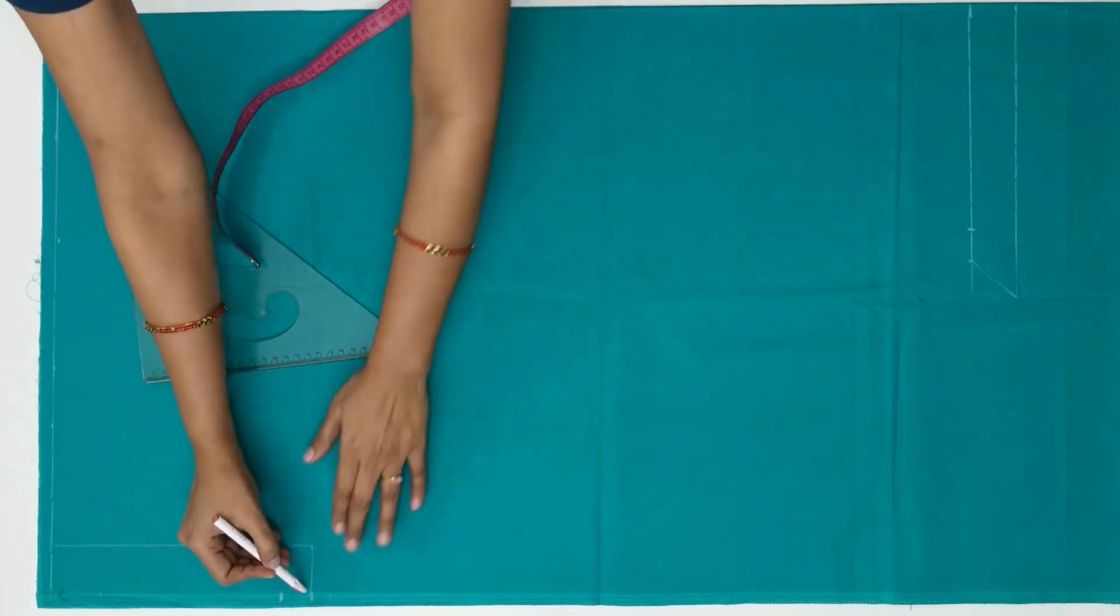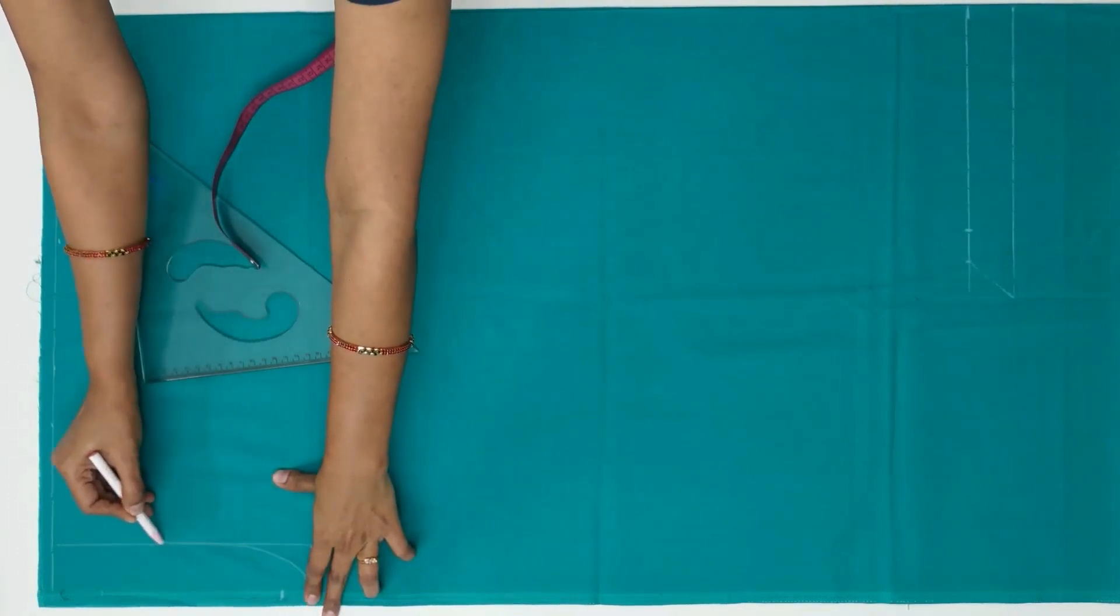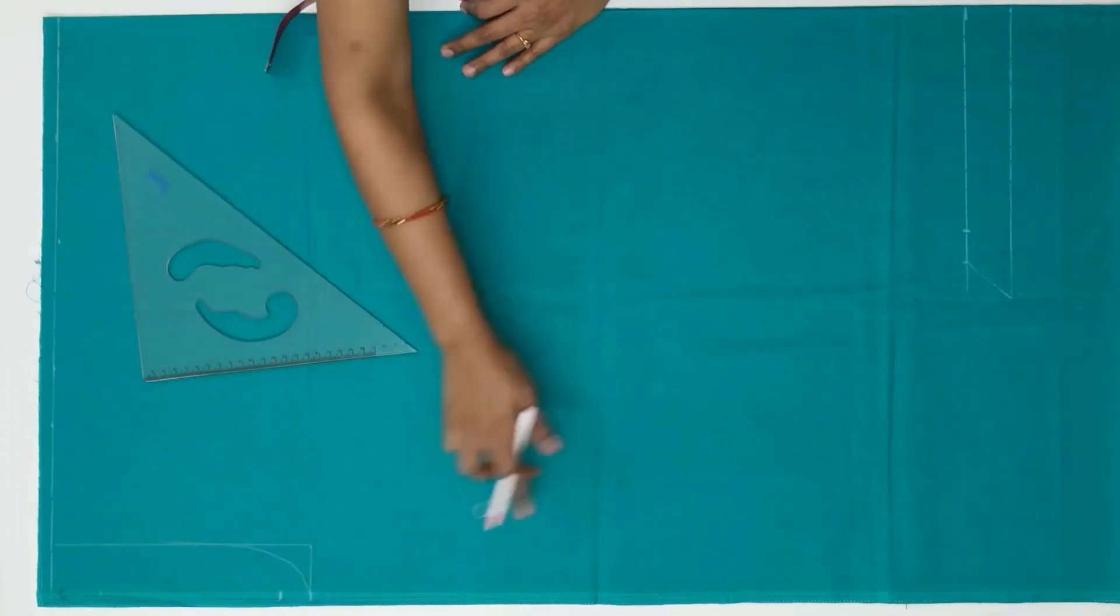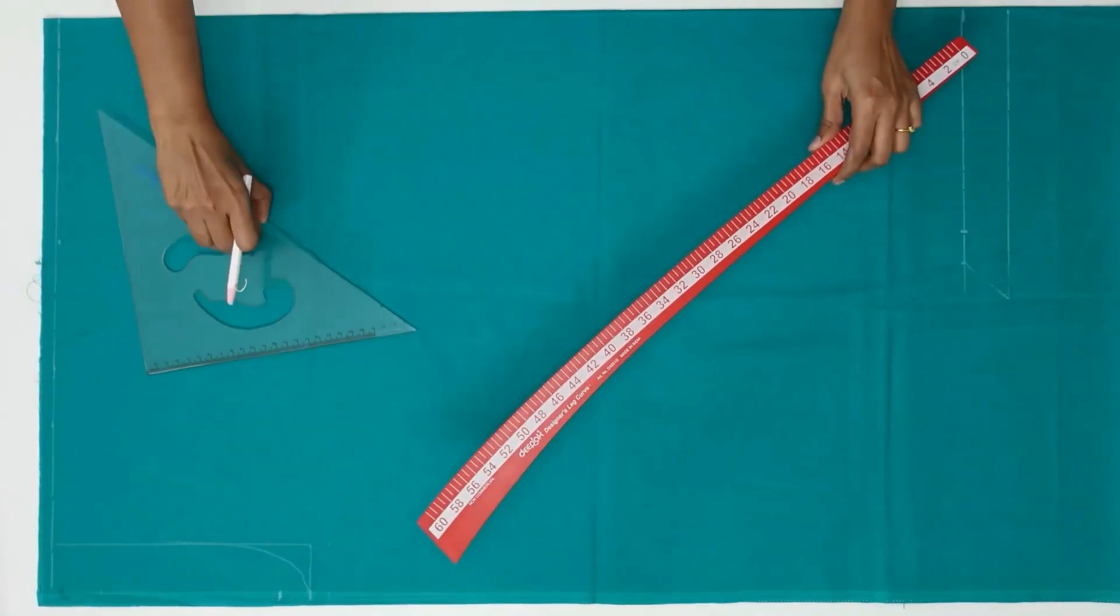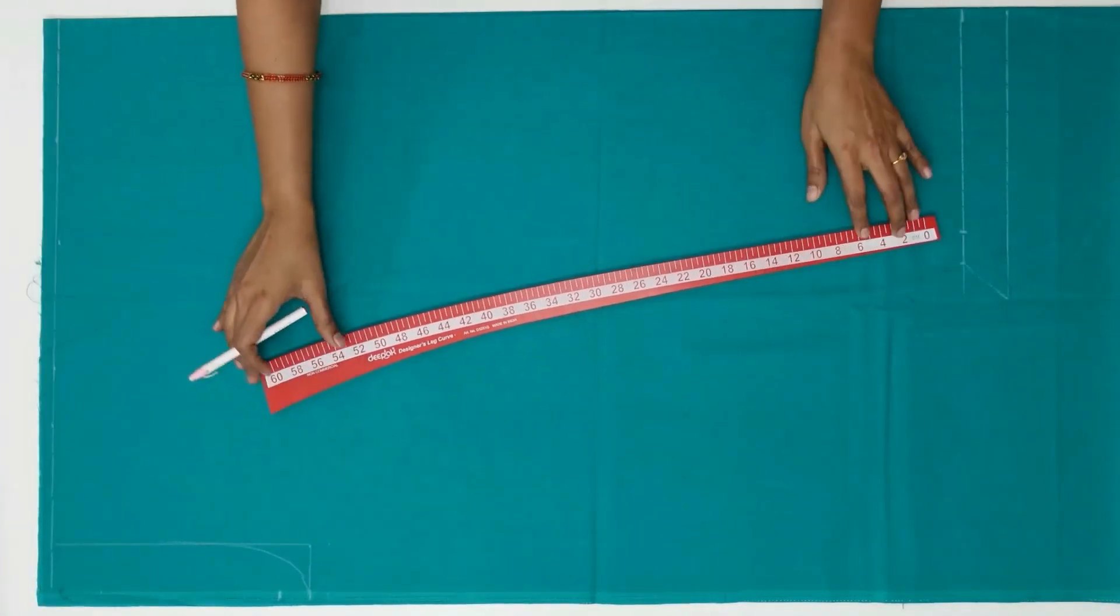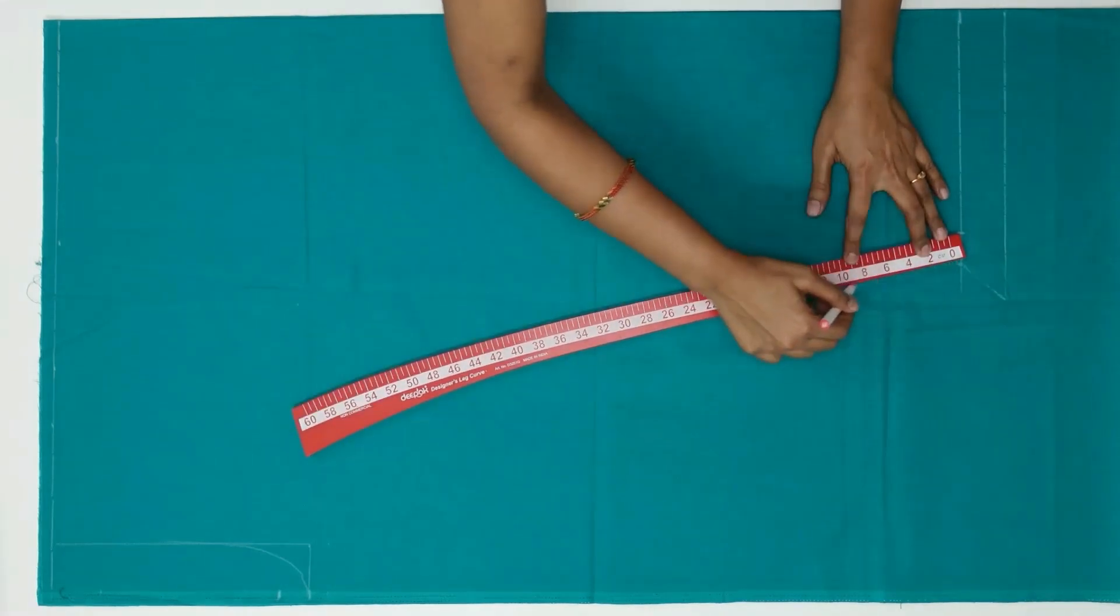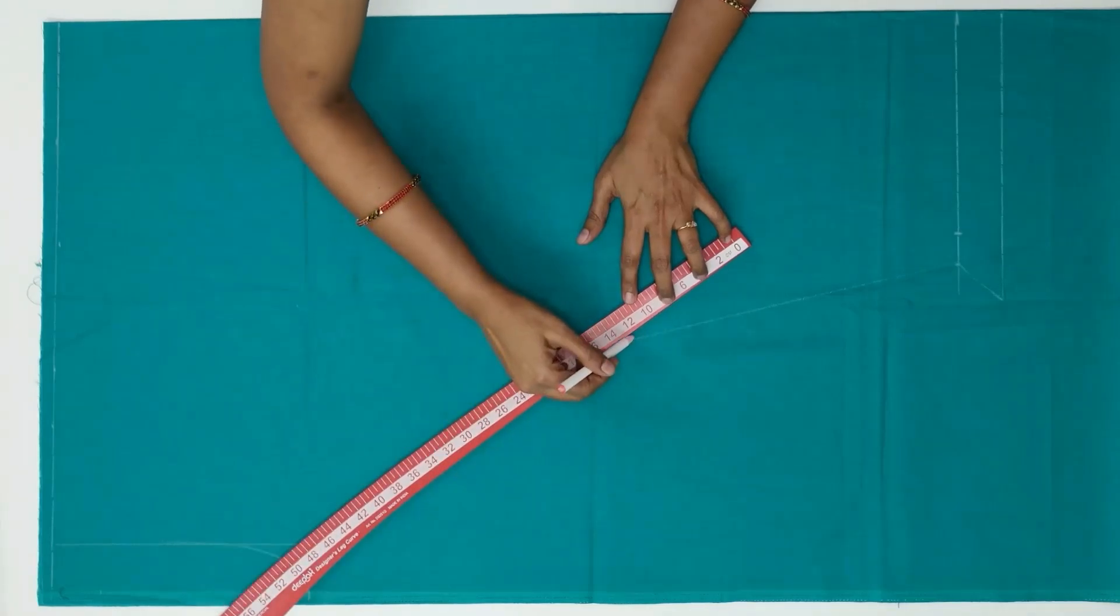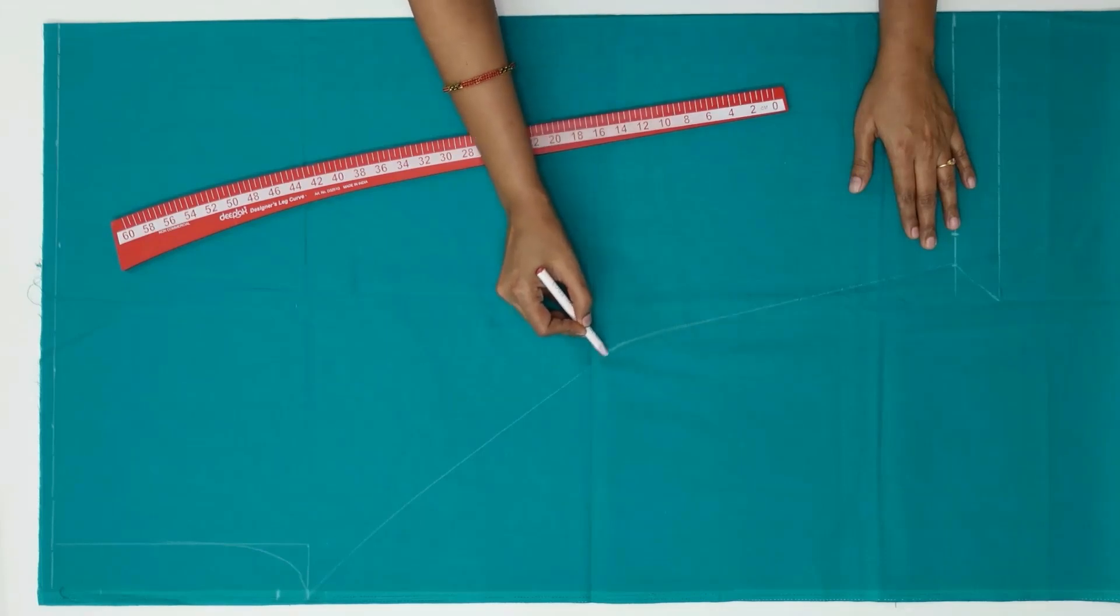And draw the curve. So this will come for the crotch. Now connect these two points. I am using this curve ruler for making the curve. So here connect it smoothly.